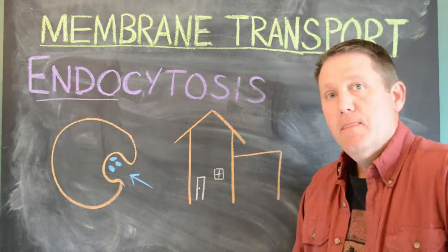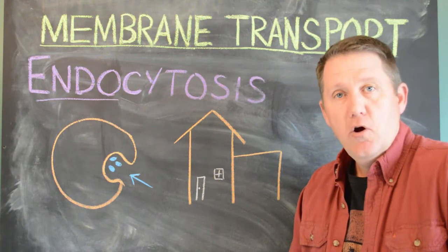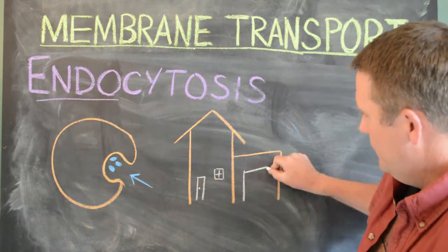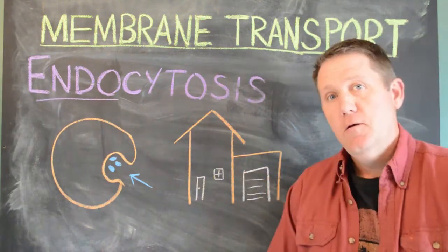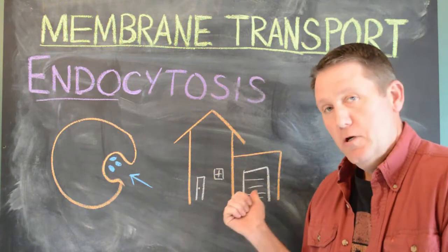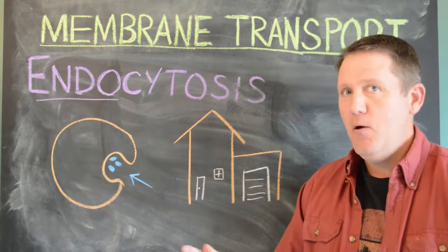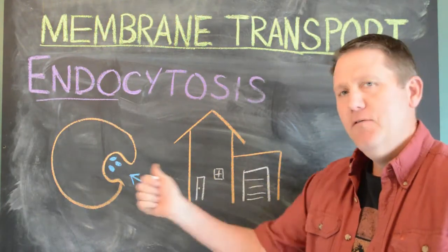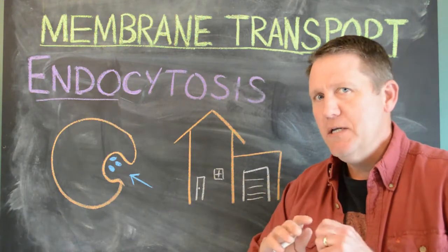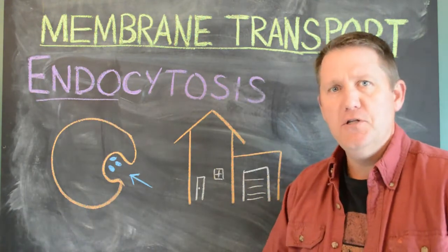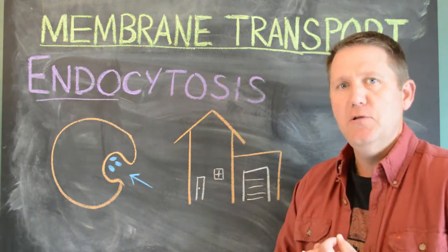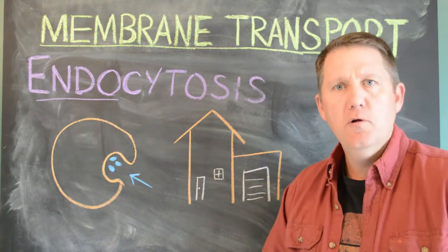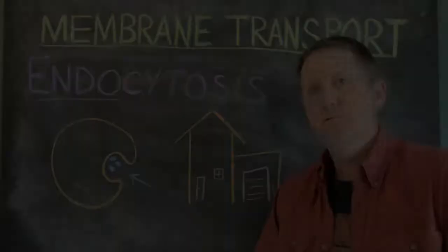If you wanted to get a car into the house, you'd need a garage with a garage door. In a similar way, we just need a different system for bringing things into the cell than normal channels or carrier proteins.